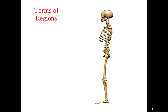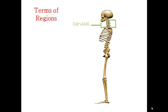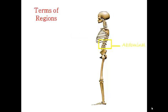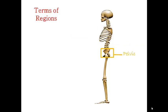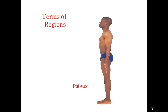Terms of Regions. The body contains seven regions. They are the cranial region, the cervical region, the thoracic region, the abdominal region, the pelvic region, plantar — which is facing the soles of the feet — and palmar, facing the palms of the hands.